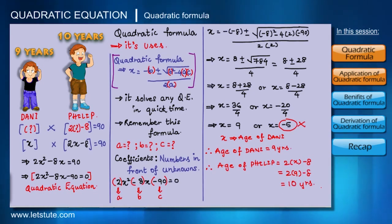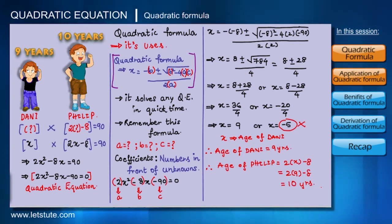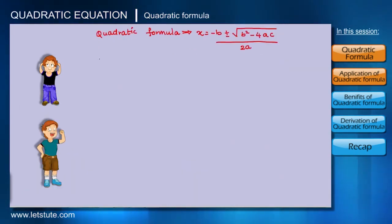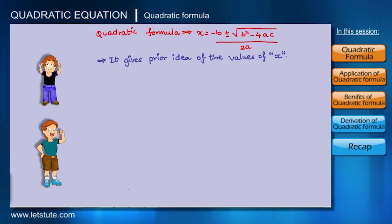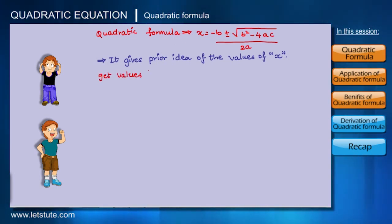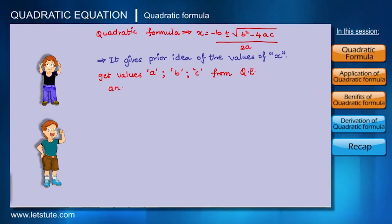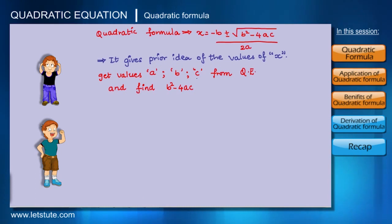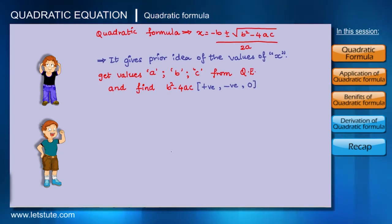This is how I used the quadratic formula to find their exact ages. I also wanted to tell them another benefit of this formula: it gives you a prior idea of what your values of X are going to be. To do that, find the value of B² minus 4AC. This expression can have three types of values — it can be positive, negative, or zero.